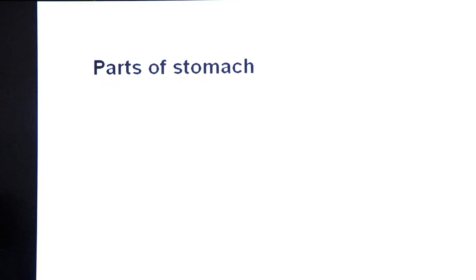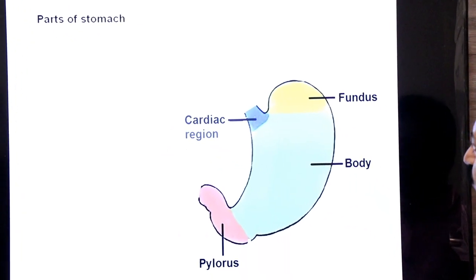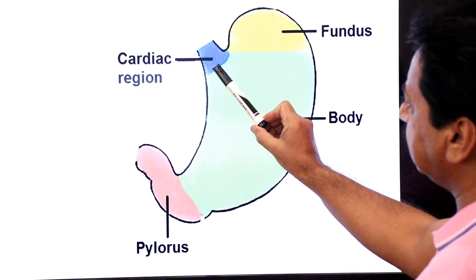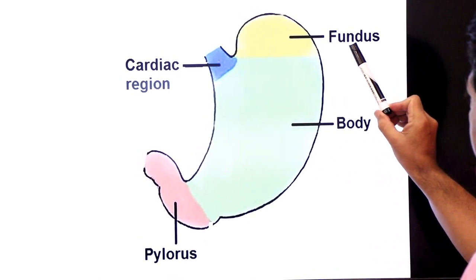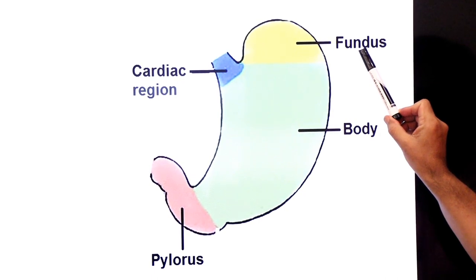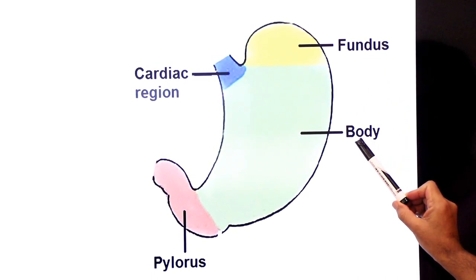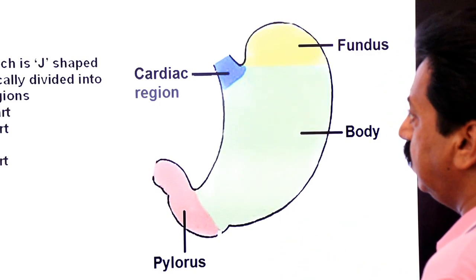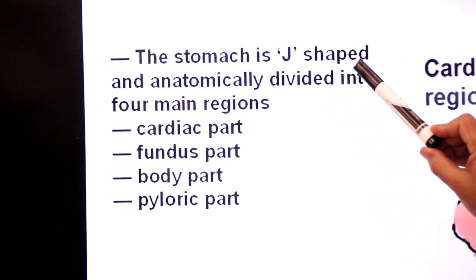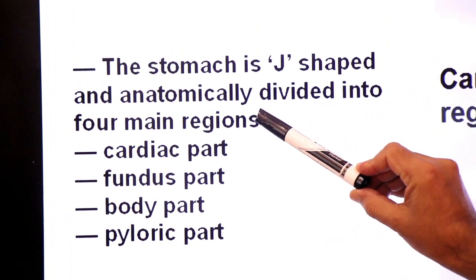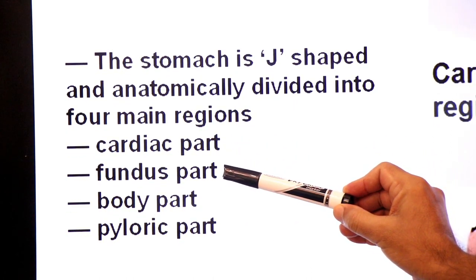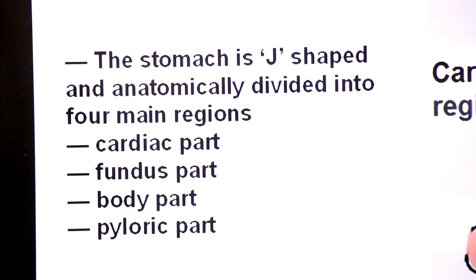Now what are the parts of the stomach? There are four parts. The first region is the cardiac region, the second is the fundus, the third central region is the body, and the fourth region is the pylorus. So the stomach is J-shaped and anatomically divided into four main regions: cardiac part, fundus part, body part, and pyloric part.